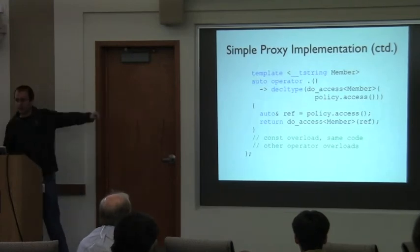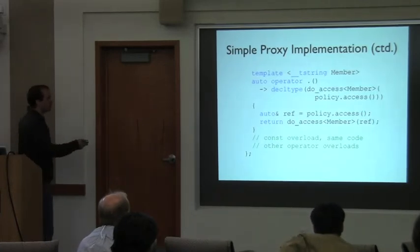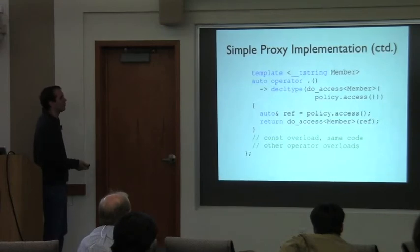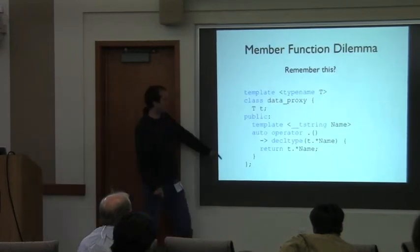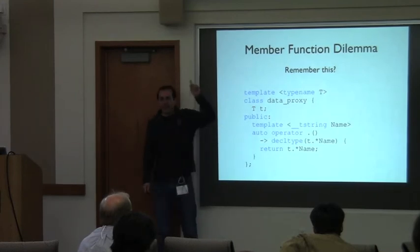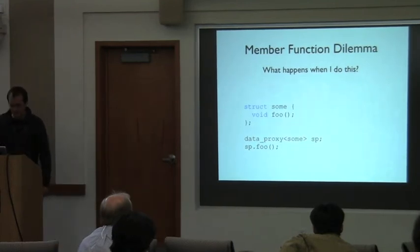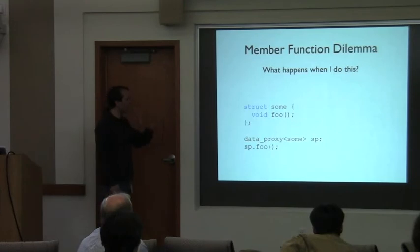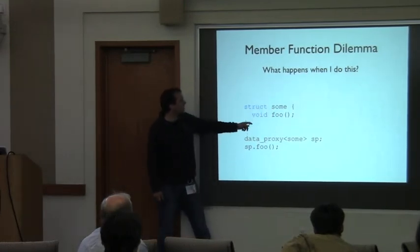The proxy class stores the policy, has a forwarding constructor, and has an operator dot that takes the member name, accesses the actual rep object by calling the policy's access function, and does the dot-star lookup. It also has a const overload with identical code. And it contains all the other operator overloads, since implicit accesses don't go through operator dot.